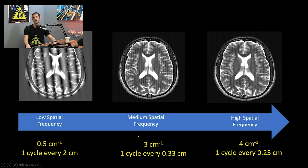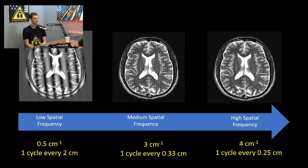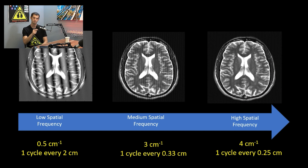What are spatial frequencies physically? A k-space value at position 0.5 per centimeter means one cycle every two centimeters — that's the distance from black line to black line on the image. In the middle picture there are three black lines per centimeter, so about one-third of a centimeter line-to-line. The far right shows four cycles per centimeter.